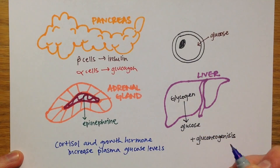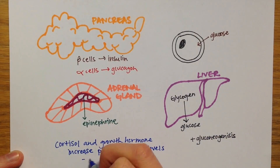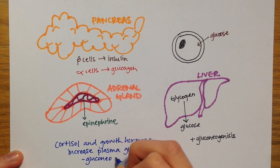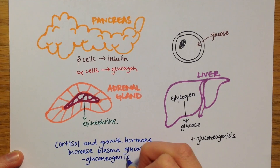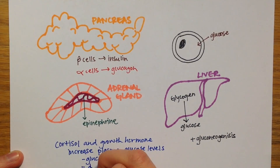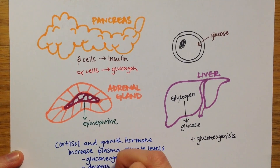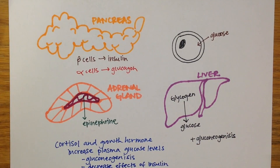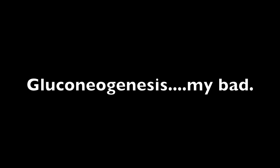Cortisol, secreted from the adrenal cortex, and growth hormone secreted from the anterior pituitary gland, both suppress the transport of glucose into some cells by decreasing the effects of insulin. Also, gluconeogenesis was spelled incorrectly twice on the slide, so let's correct that.